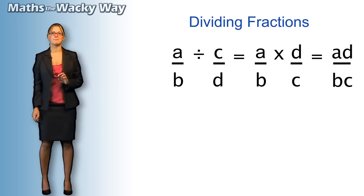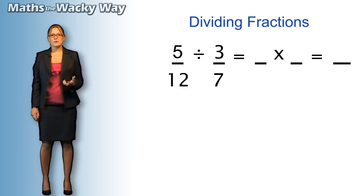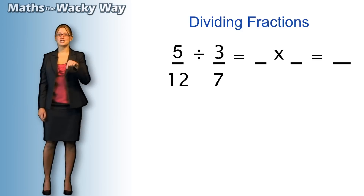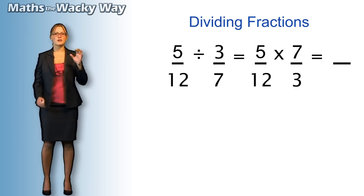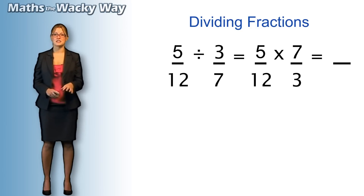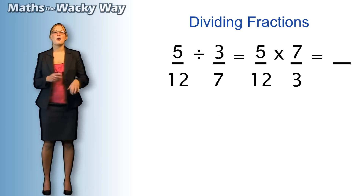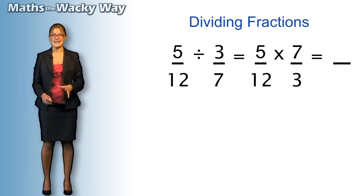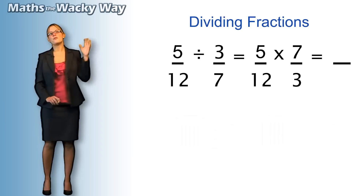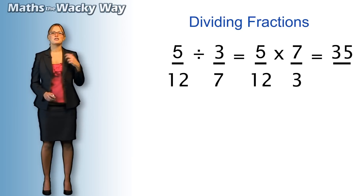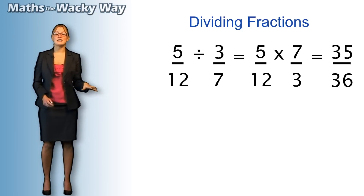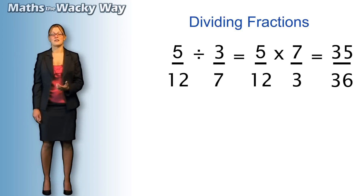Let's put some numbers to it. If we have five twelfths divided by three sevenths — divide, not sure about that — let's change it to a multiplication. Change the divide into a multiply sign, flip the fraction that follows: three over seven becomes seven over three. Now we've got multiplication, so we can pow-pow. Five times seven is thirty-five. Twelve times three is thirty-six. Thirty-five over thirty-six — that's how you'd leave your answer, because we can't simplify it down anymore; thirty-five and thirty-six have no common factors.